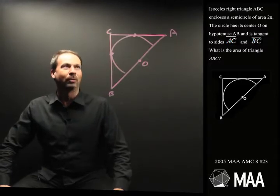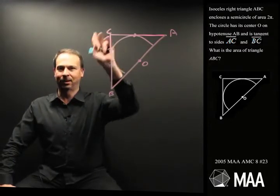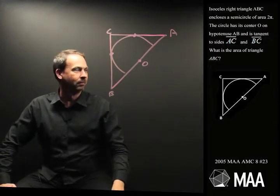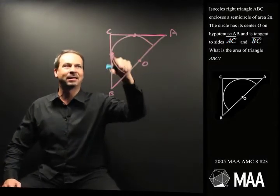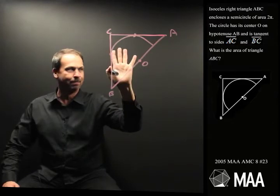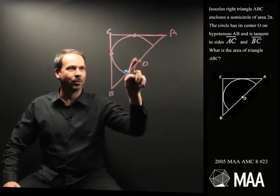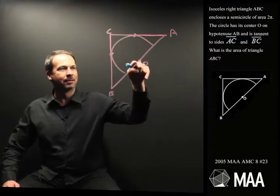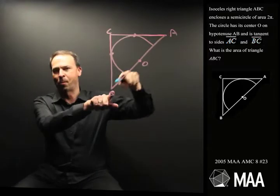Isosceles right triangle ABC, it's a right triangle, encloses a semicircle of area 2π. Okay, so my picture's a little bit off here, but that's a semicircle of area 2π. The circle has centre O on hypotenuse AB, so that O is on the hypotenuse. That's definitely the hypotenuse.